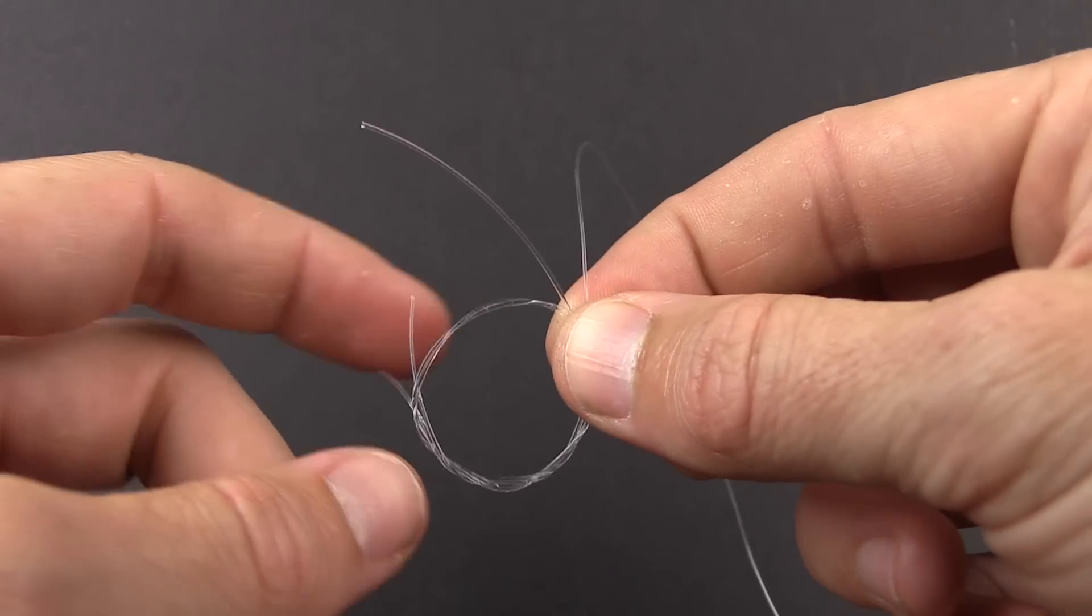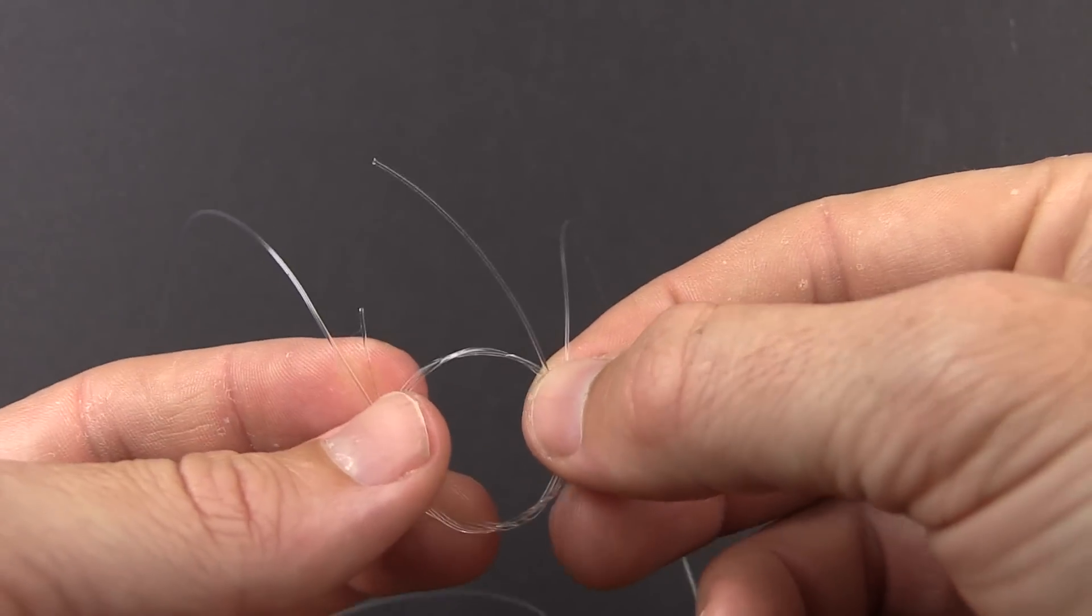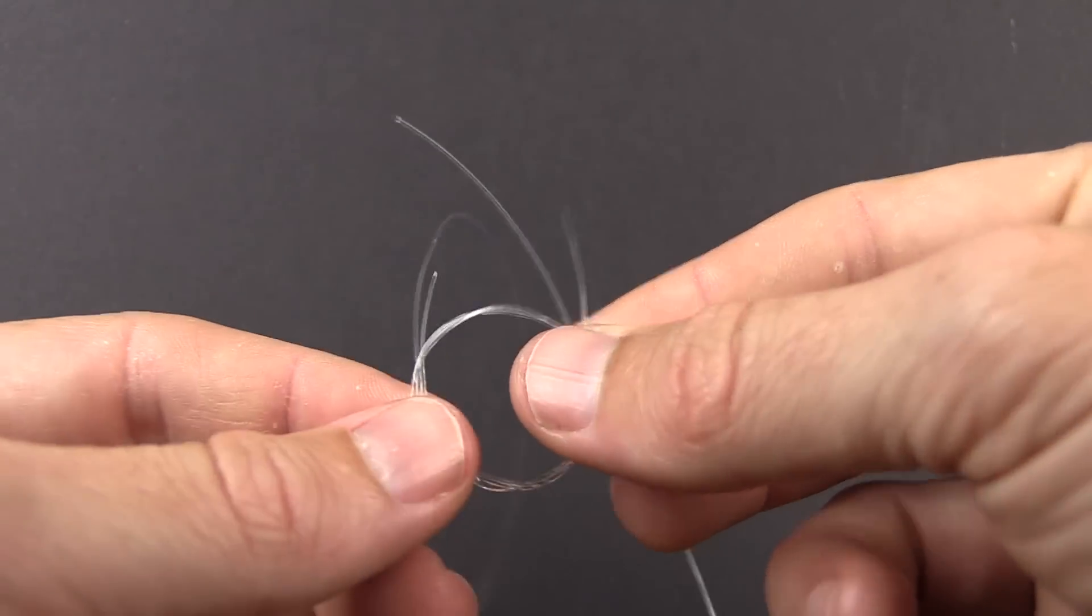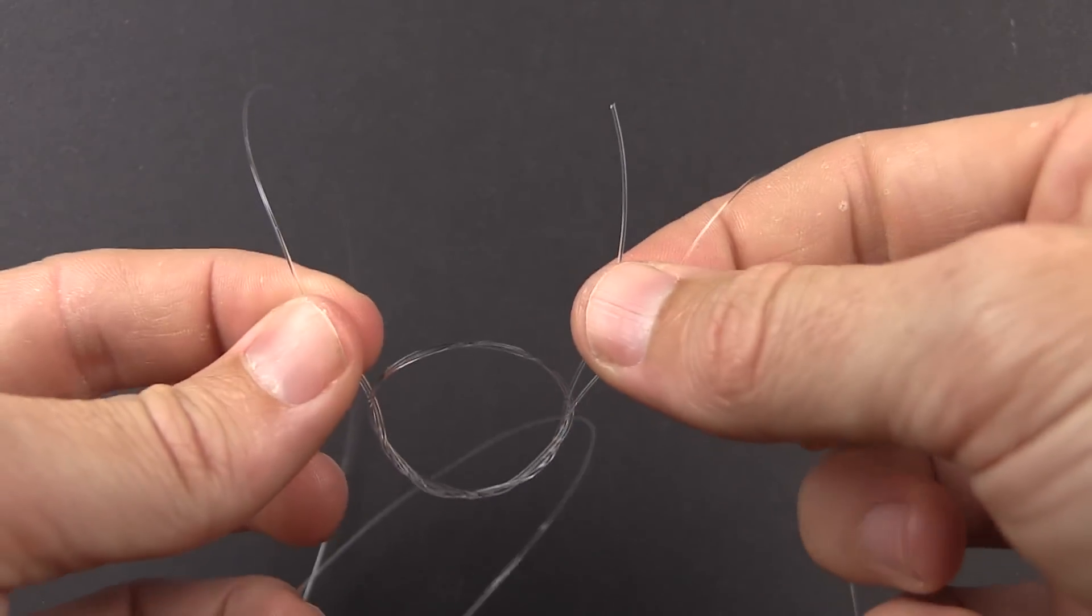You can see the two tag ends are both sticking up from opposite directions, and then the main line is coming off from this direction, the leader from this direction - it's just basically one loop. What we do is grab all four lines coming out of the loop - the two tags and the two main lines - and pull them in unison.